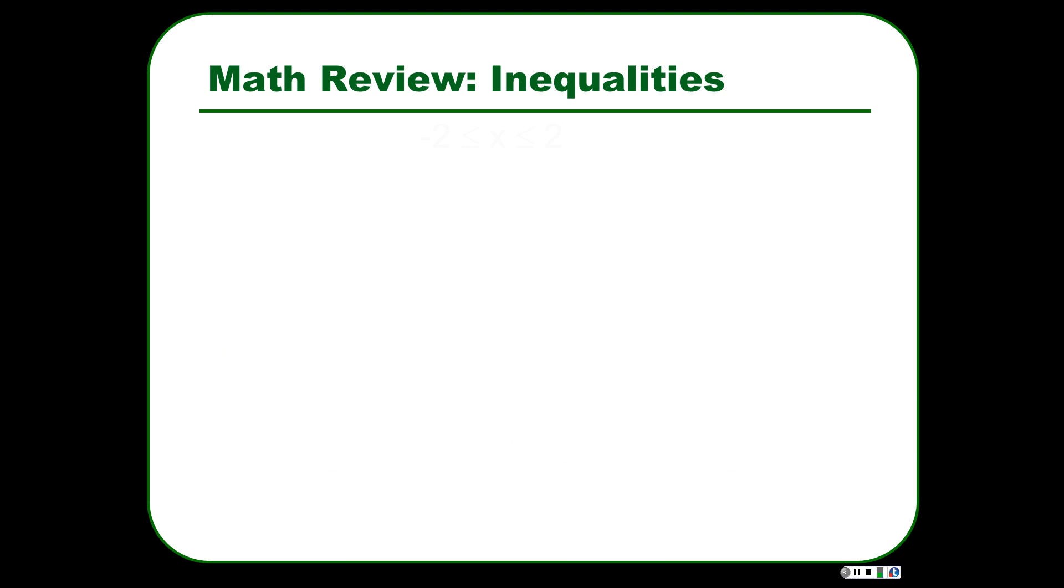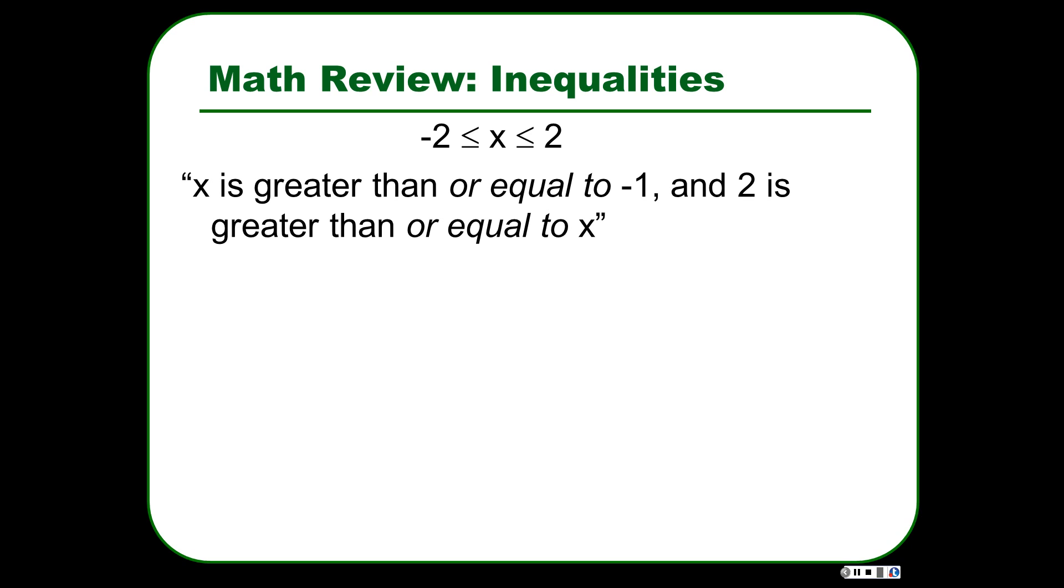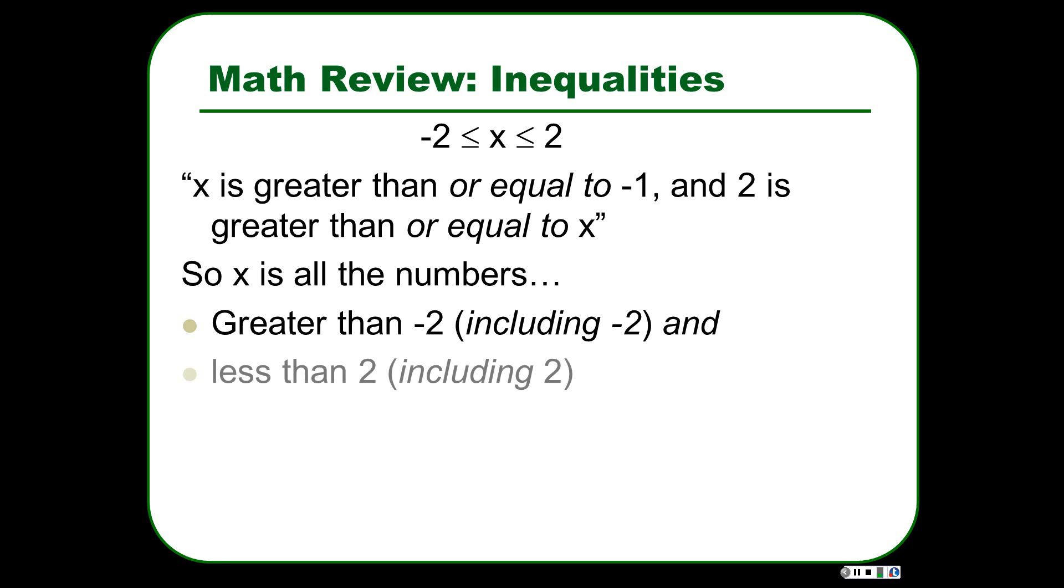So here's another example. x is greater than or equal to negative 2 and less than or equal to 2. So x is all the numbers that are greater than negative 2 including negative 2 this time, and less than 2, positive 2, but including 2. So if we put those two numbers on the number line, x just includes them. It's similar to the first example, but it includes both numbers this time.